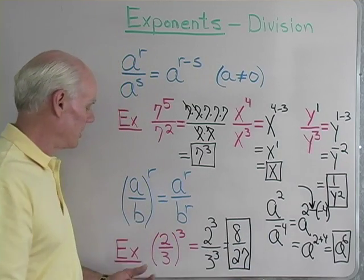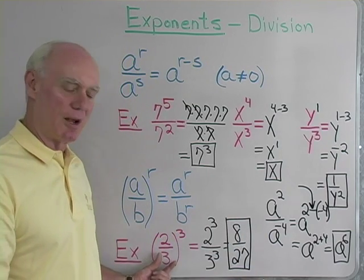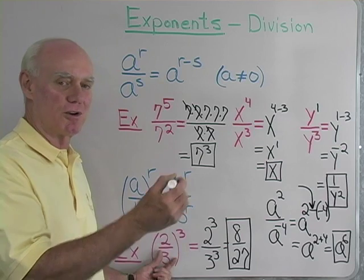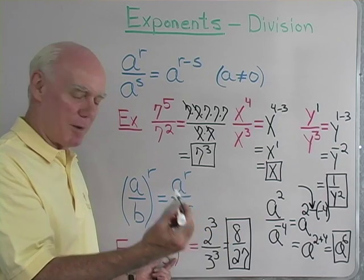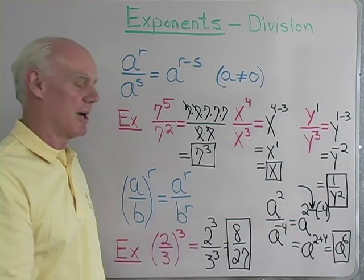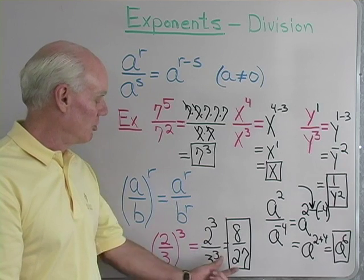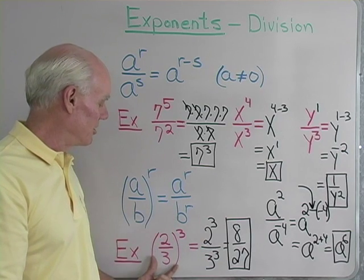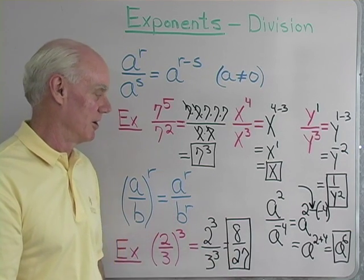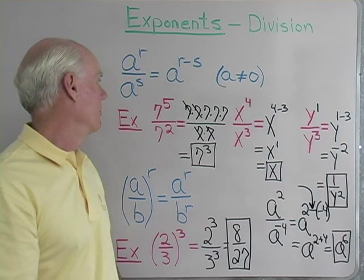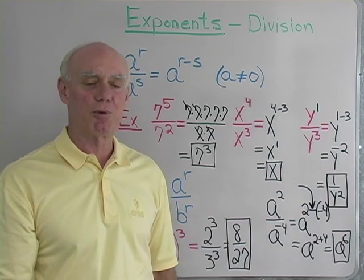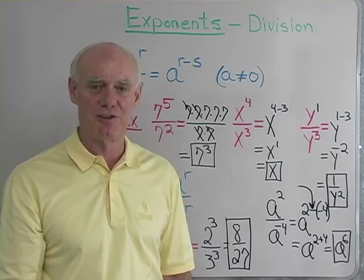And you know that's correct because if I just took 2 3rds and multiplied 2 3rds times 2 3rds times 2 3rds with what I know about fractions, that would come out to be 8 27ths. And sure enough, applying this property to this expression, I get the same result. So there's a look at some simple problems that involve the properties of exponents that have to do with division.